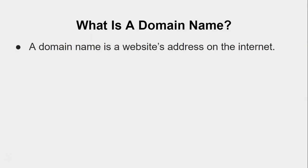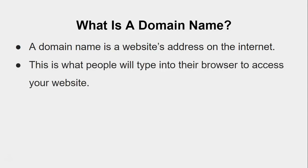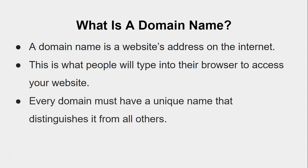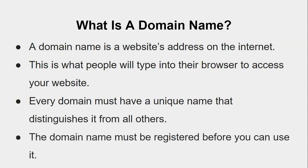So what is a domain name? A domain name is a website's address on the internet. This is what people will type into their browser to access your website. Every domain must have a unique name that distinguishes it from all others, and the domain name must be registered before you can use it. When you think about www.google.com or www.nike.com, that is their website address — that's what a domain name is.